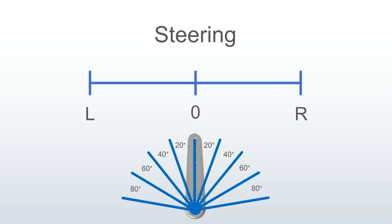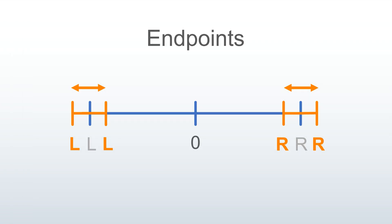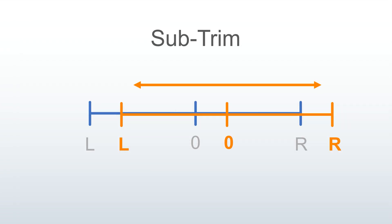Let's use this diagram to signify your steering as it corresponds to the servo. This is your endpoint adjustment — left and right endpoints are adjustable independently. This is your subtrim setting. It shifts the entire range, including the endpoints and the zero center together. Set this first, and double-check your endpoints any time you change the subtrim.